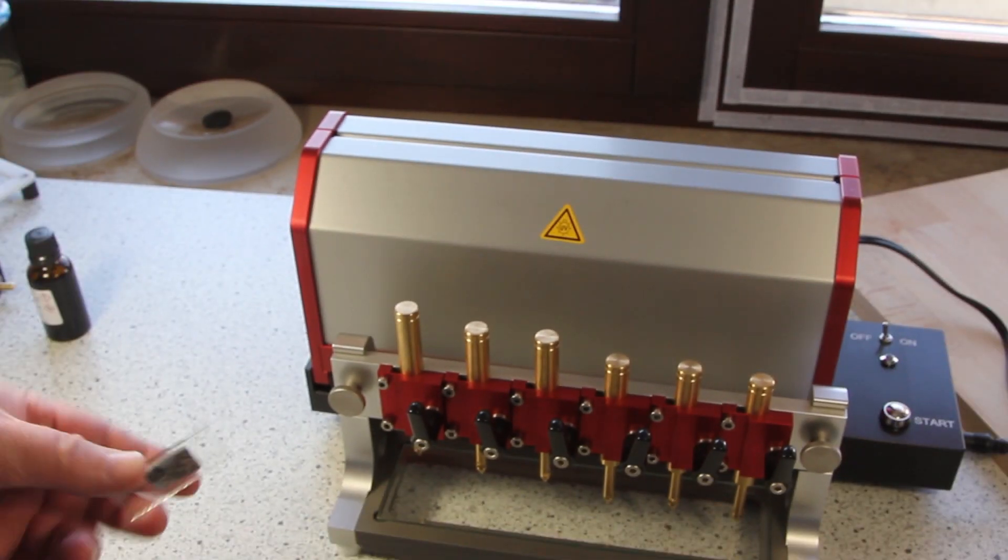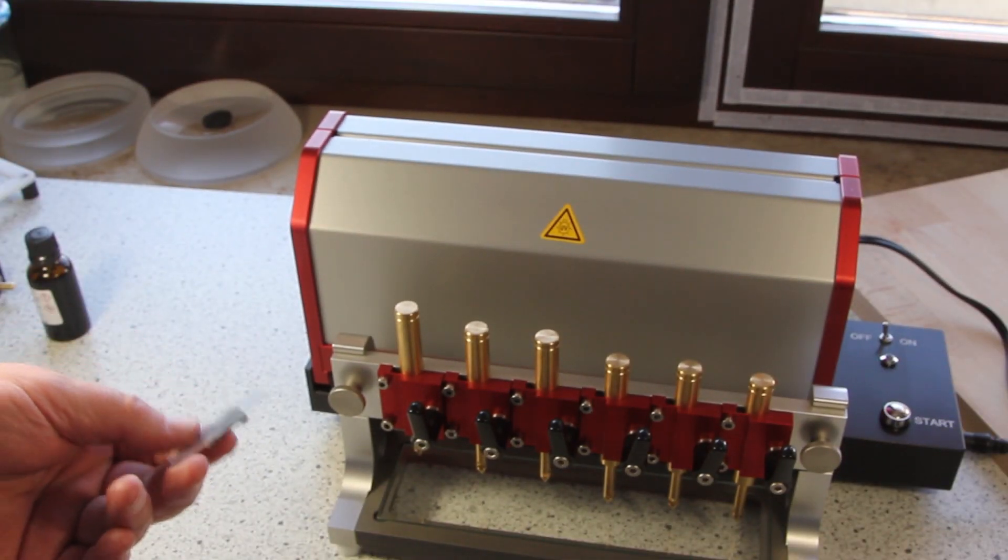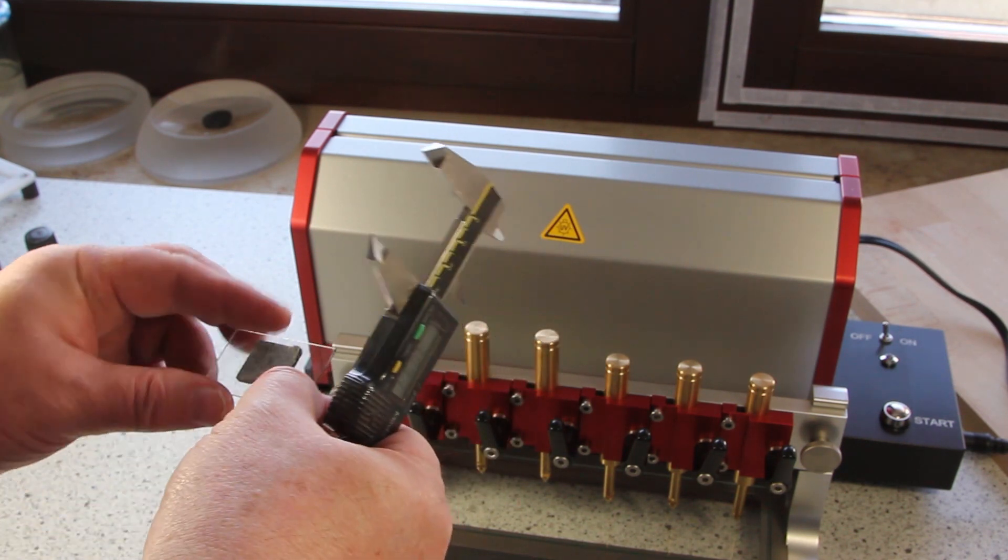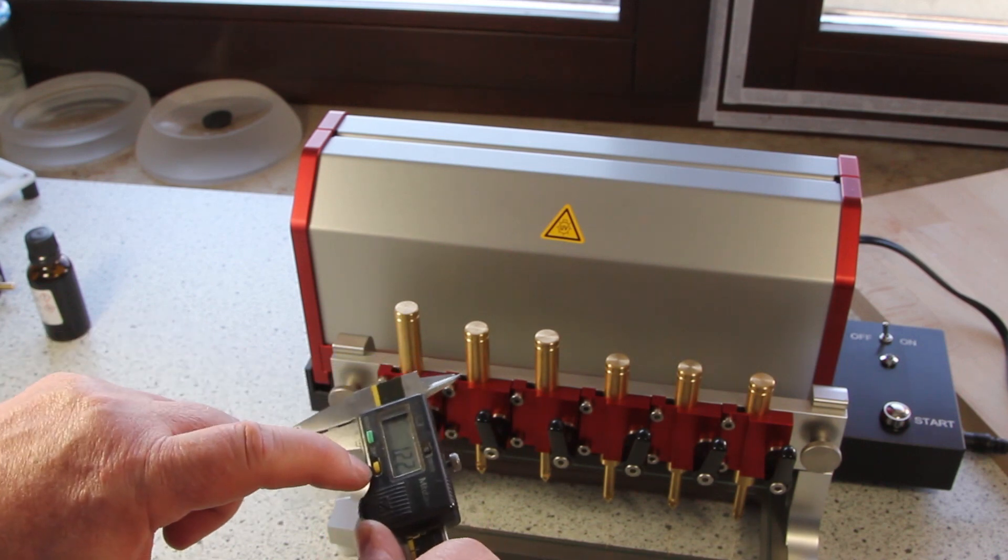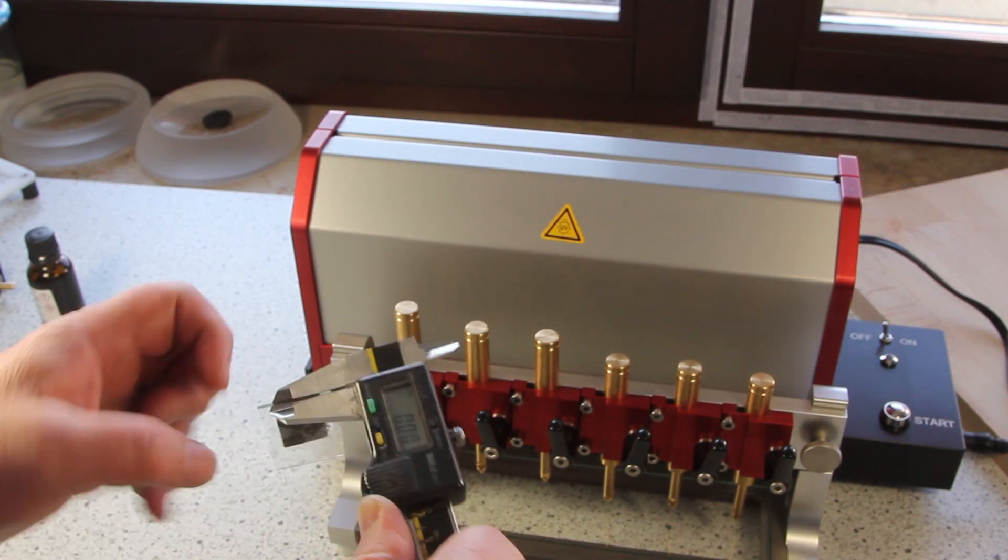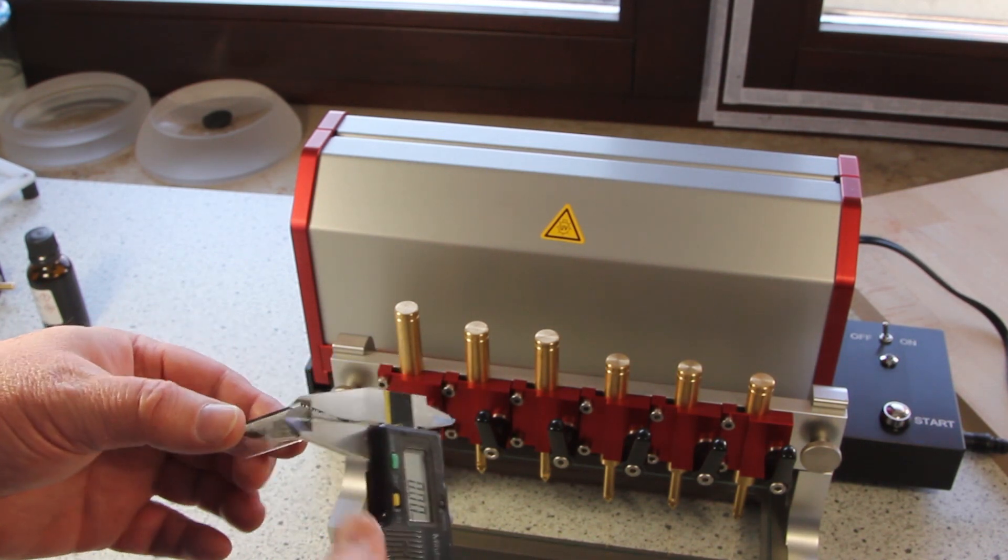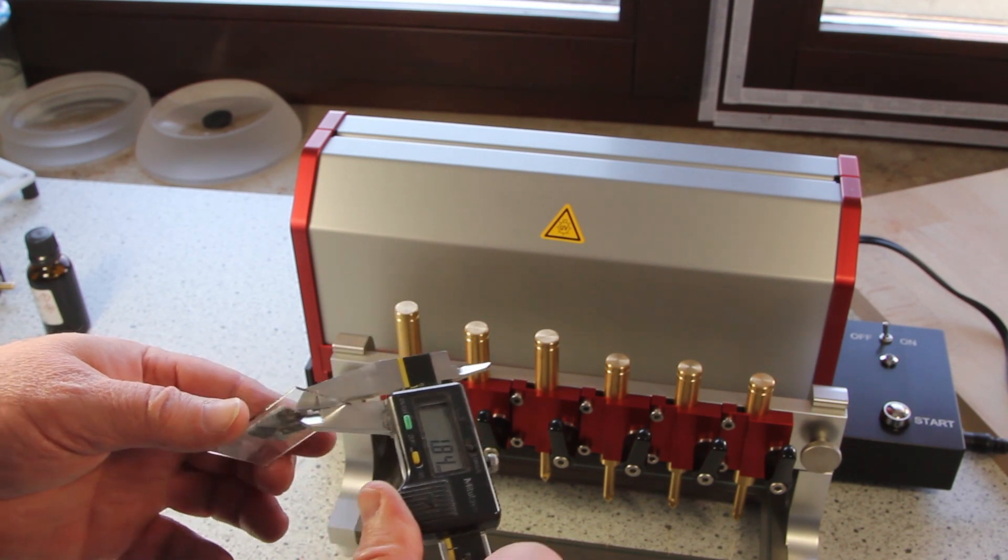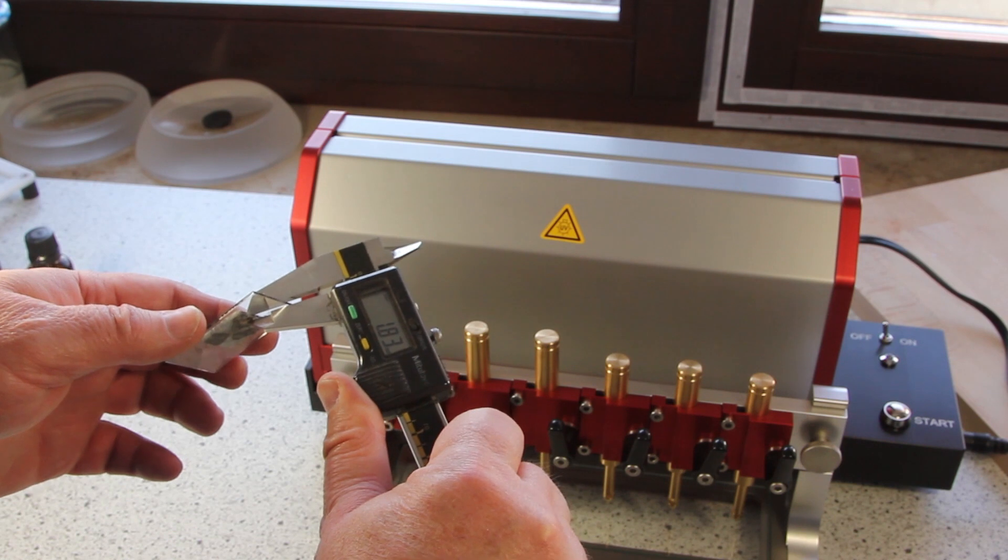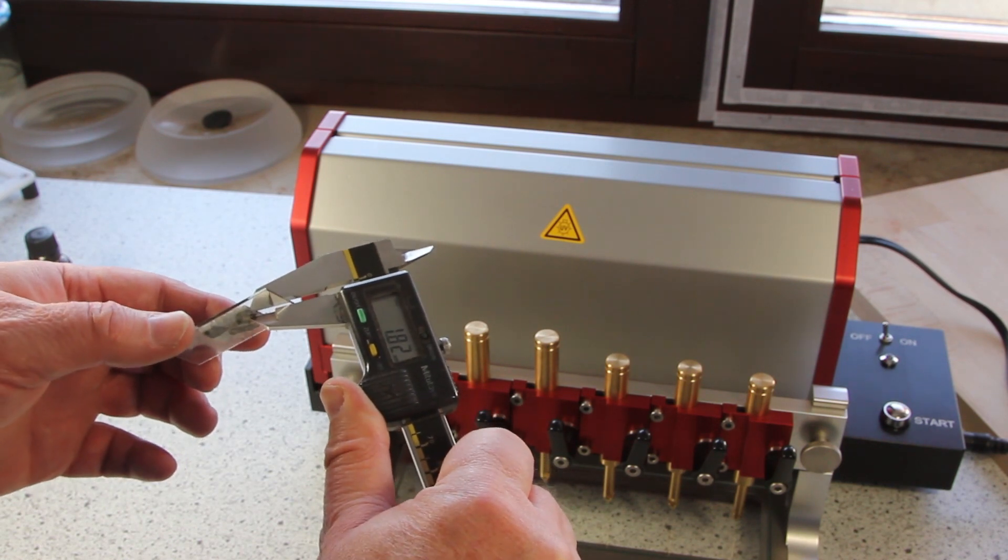And now it's good to know how thick the samples are. So I set my caliper on zero on the glass. And I can see that the sample has a little less than 2mm.